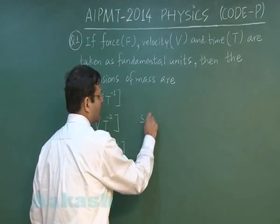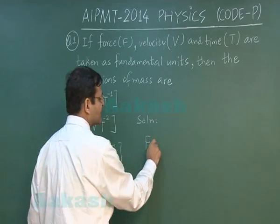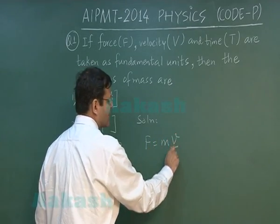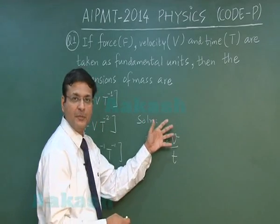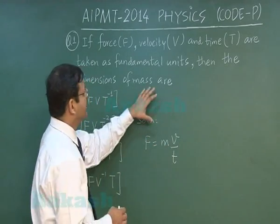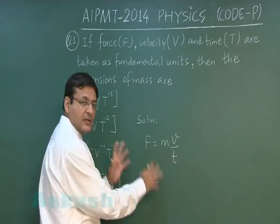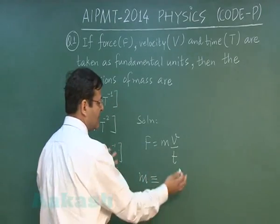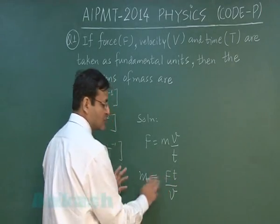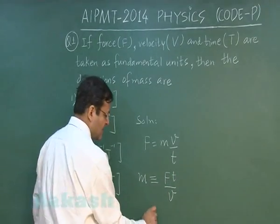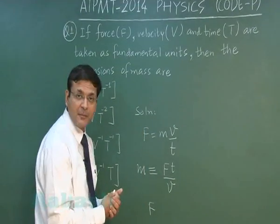If I go by the basic law instead of going by deep dimensional analysis, I use the basic equation F equals mass into acceleration, and acceleration is further divided as V by T. Now, if they are demanding the dimensions of mass, for the sake of writing down the dimensions of mass, I do the cross multiplication. For the dimensional part, I write F as F because they have been treated as fundamental units.